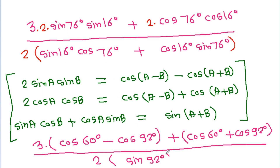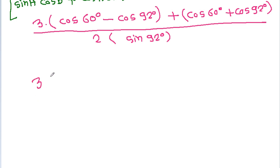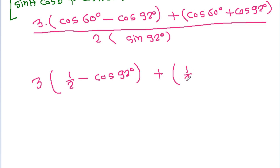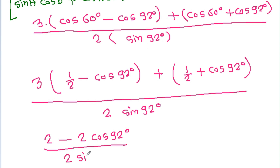It is 3 times: cos 60 is 1 by 2, minus cos 92 degree, plus cos 60 is 1 by 2, plus cos 92 degree, by 2 times sin 92 degree. And 3 times 1 by 2 plus 1 by 2 will be 2, and 3 times minus cos 92 degree plus cos 92 degree will be minus 2 cos 92 degree, by 2 times sin 92 degree.